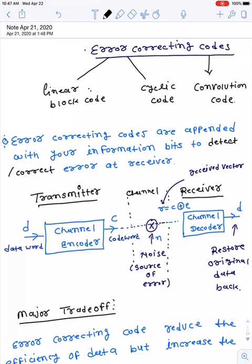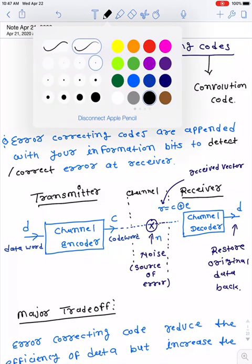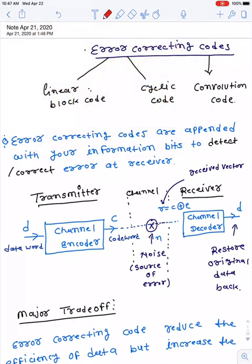Good morning everybody. Today we discuss channel coding, and in channel coding we will learn about error correcting codes — basically three kinds of error correcting codes addressed in three consecutive lectures. The first is known as a linear block code, the next lecture covers cyclic code, and the lecture after that covers the convolution code.